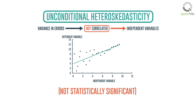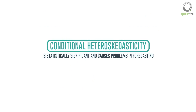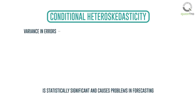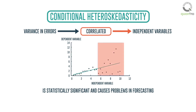On the other hand, conditional heteroscedasticity is what causes problems in forecasting, since it is statistically significant. It occurs when the variance in error is correlated with the independent variable. In this graph, as the value of the independent variable increases, the variance in the error term also increases. The highlighted area is that of low residual variance, and this one is that of high residual variance.